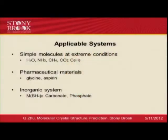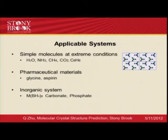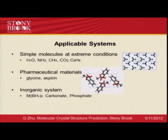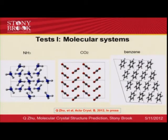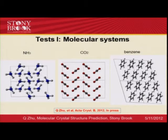This method can be applied to many systems. For instance, we can study the high-pressure behavior of molecules at planetary conditions. We can use it to design pharmaceutical materials, which is probably the most promising field for this method. We can also extend the method to study inorganic systems — complex structures containing molecular units, which are very common in hydrogen storage materials and some minerals. We have done many tests: for molecular systems, we studied ammonia, carbon dioxide, and benzene, and we can easily reproduce the experimental results. We also studied inorganic systems like magnesium boron hydride, a promising hydrogen storage material.